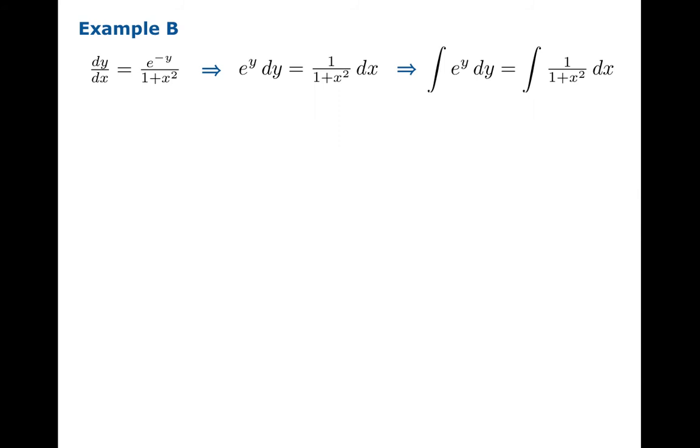And you integrate both sides. On the left side you get e to the y. On the right side you get arctan of x plus your constant, which we only need to put on one side. Solving for y gives you ln of arctan of x plus k.